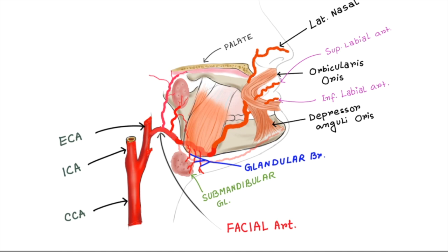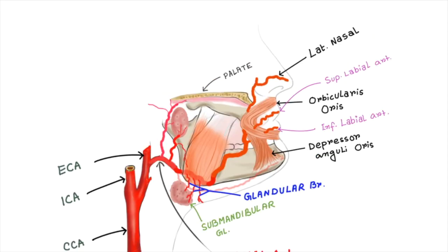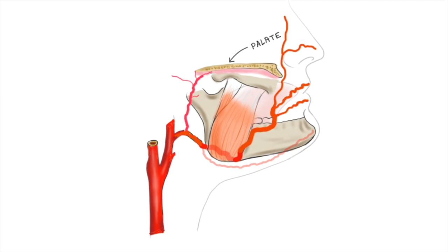The angular artery is the terminal part of the facial artery. It ascends to the medial angle of the eye's orbit and supplies the lacrimal sac and orbicularis oculi muscle.